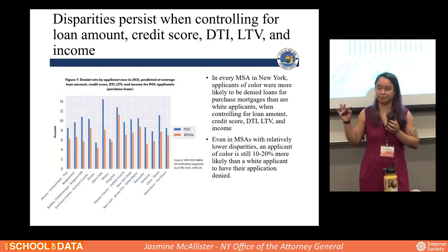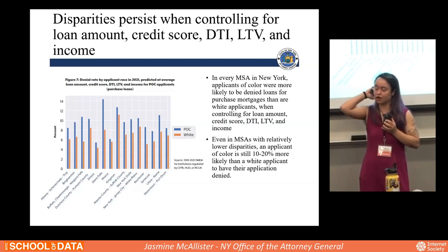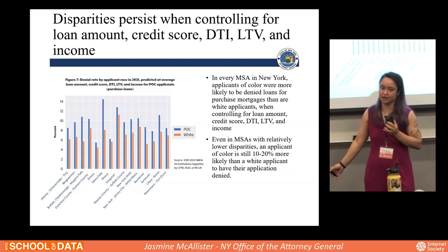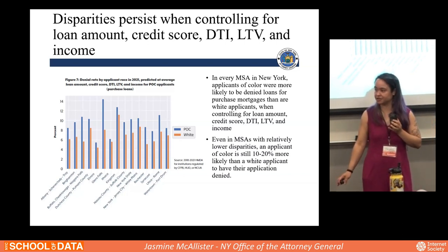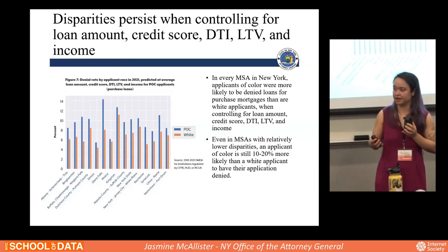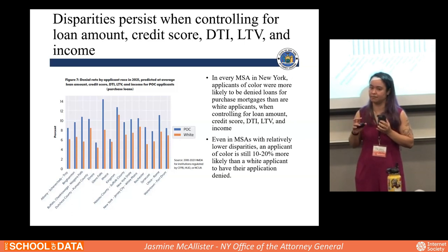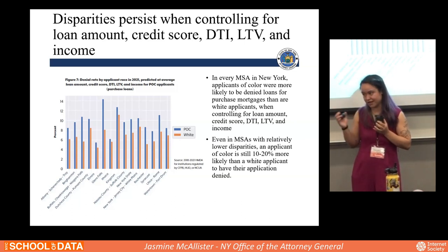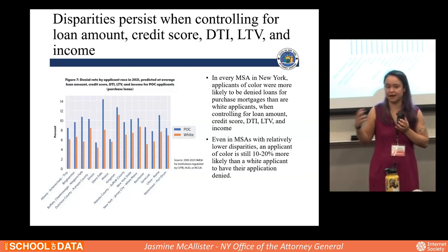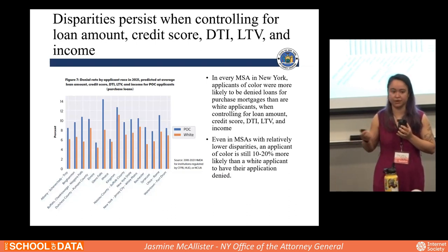Next we looked at mortgage applications for home purchases — this is where we use that credit score data. We ran a regression controlling for loan amount, credit score, debt-to-income ratio, loan-to-value ratio, and income, and looked at the odds of approval or denial. The clusters of bars show each MSA — New York City and surrounding area would be one MSA. The blue bar is the denial rate for people of color controlling for all those factors; the orange is for white people. In every MSA, the blue bar is taller, showing people of color are denied applications even when they are very similar borrowers.